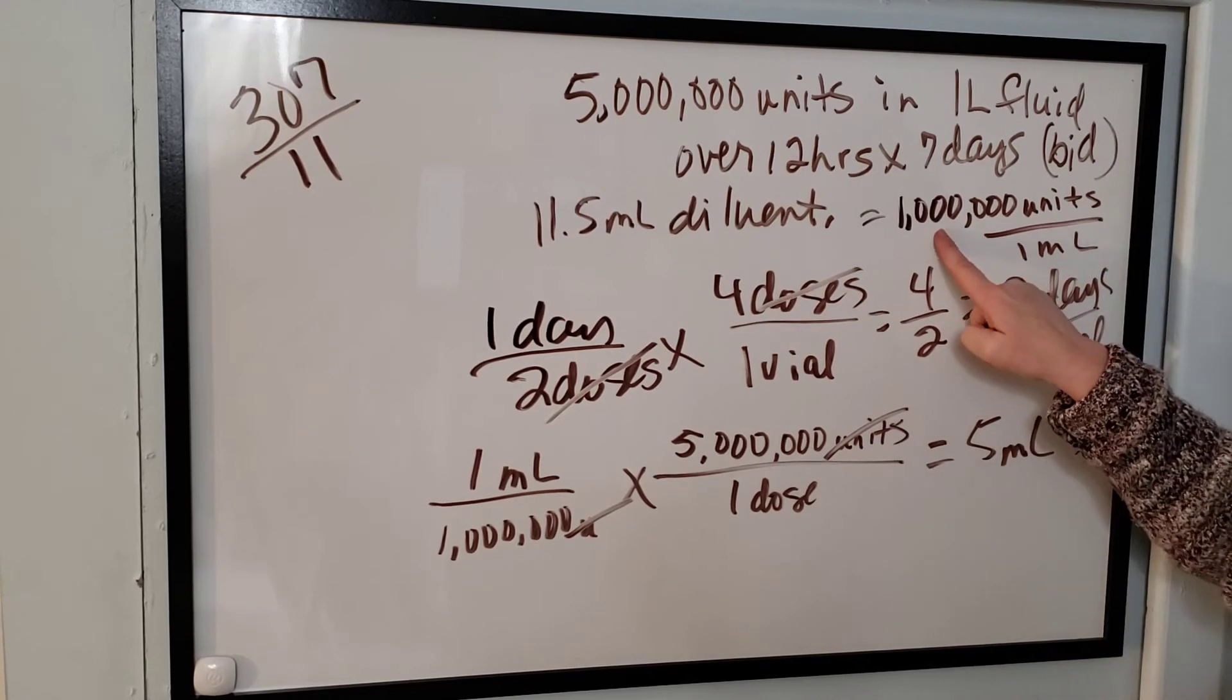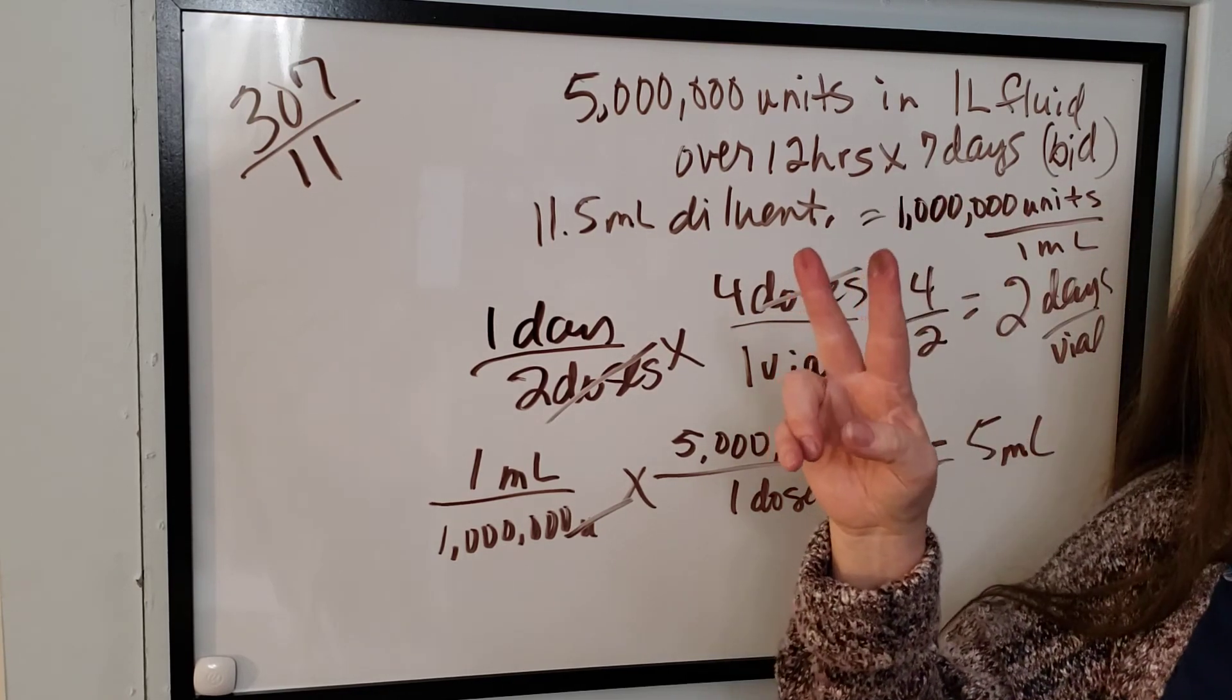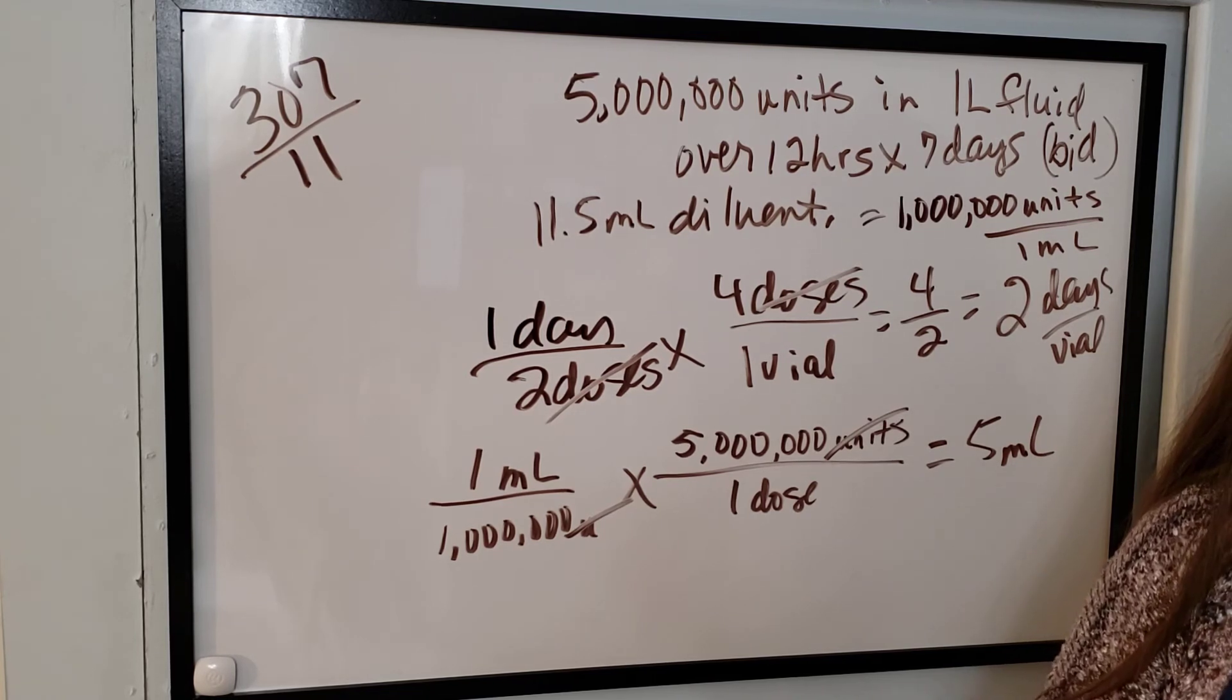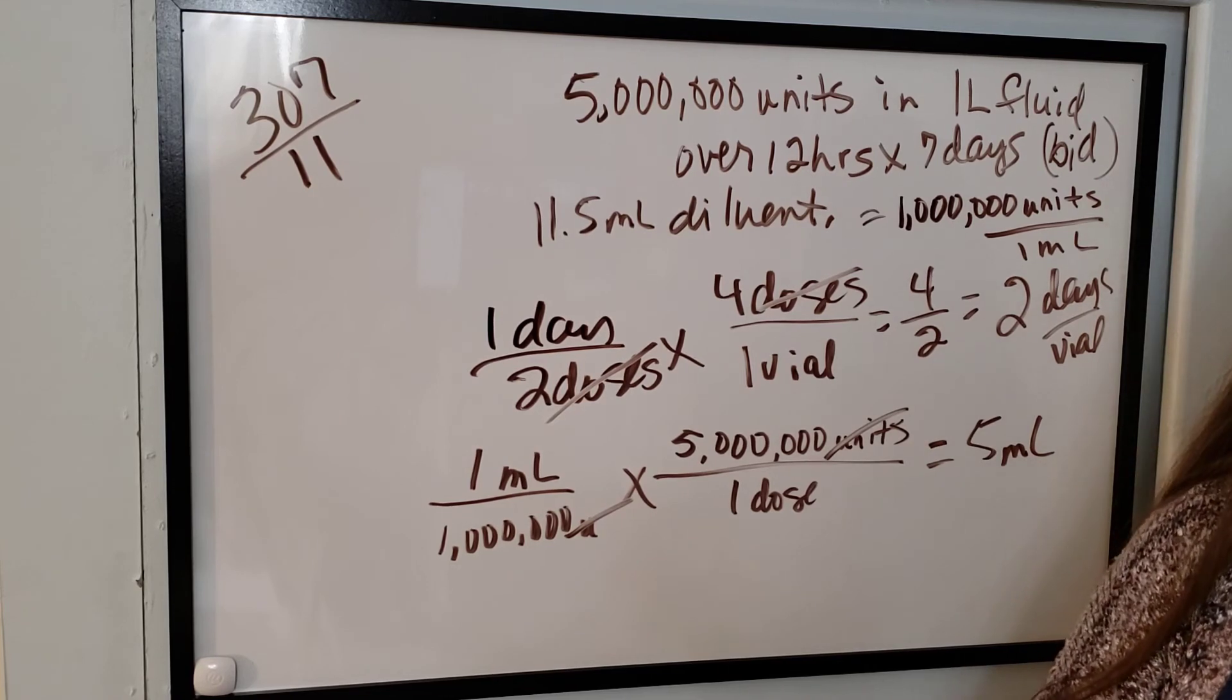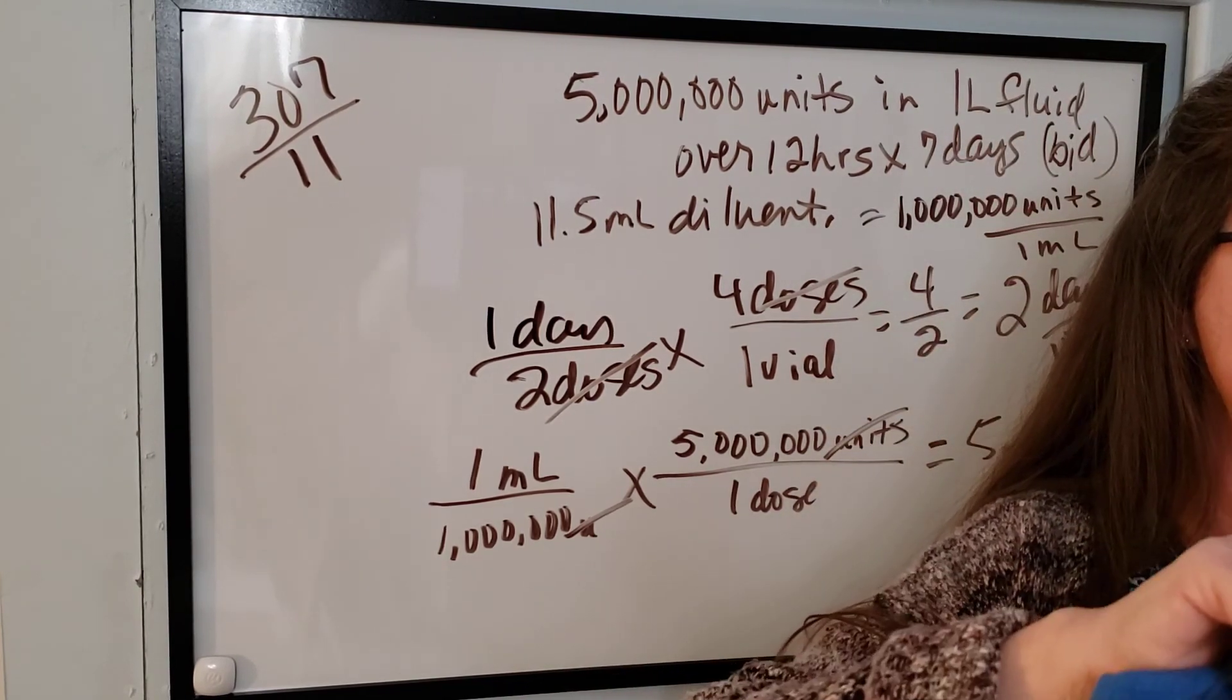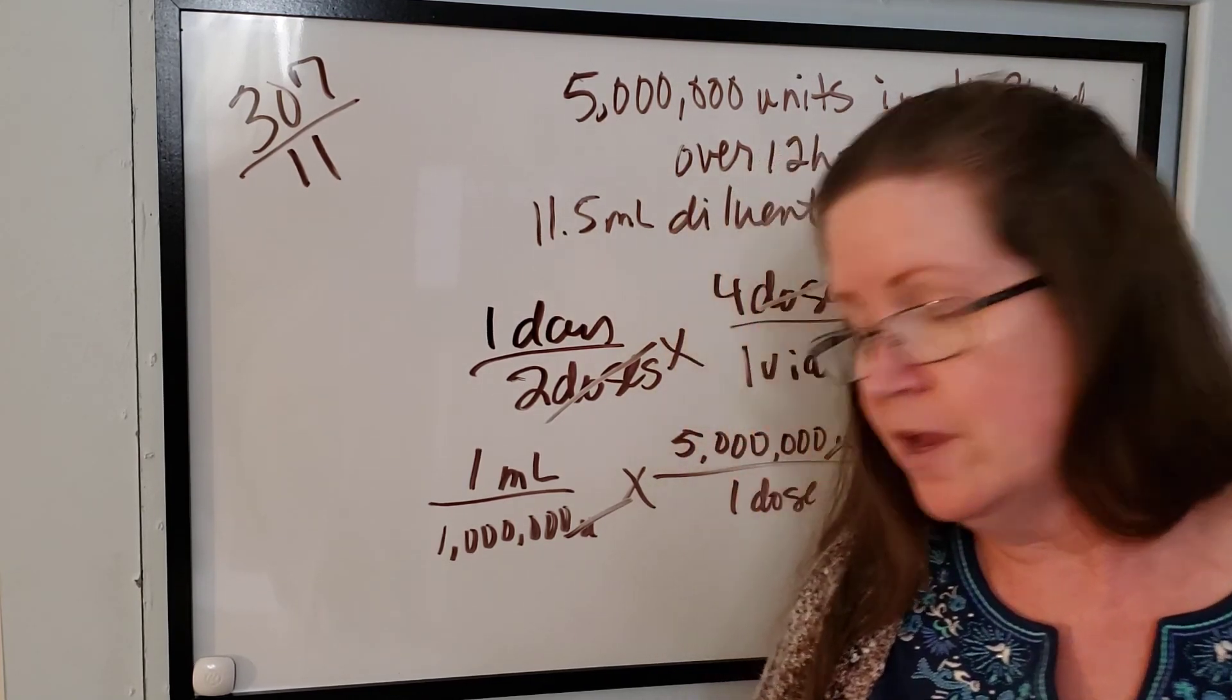So the one thing we want to put on there is what concentration we diluted it to. So we should put on there one million units per ml. That's the one thing. The second thing is how long, or where are we storing it? Where did we say we were storing it? Refrigerator. Refrigerator. And how long is it good for? Seven days. Seven days. Exactly. So you put your final concentration, where you're storing it, and how long it's good for. And those are the three pieces of information that you have to put on there.